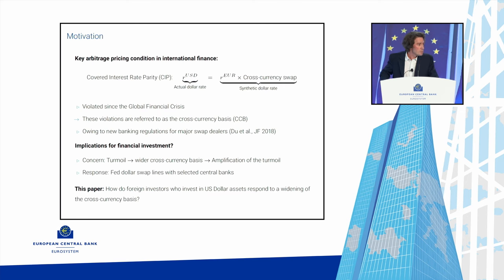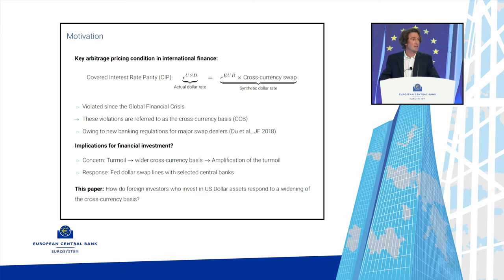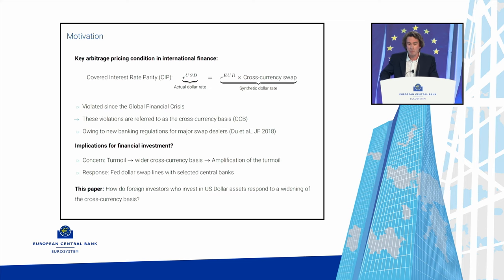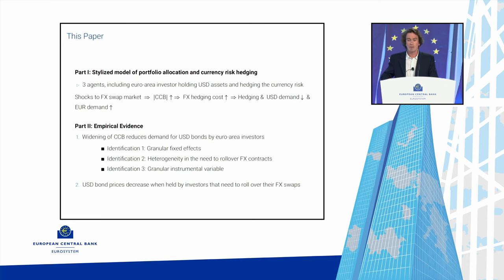What we don't know much about — what is not in the literature — are the implications of the cross-currency basis. The main concern is that in periods of turmoil there is a widening of the basis, and this widening somehow amplifies the turmoil through investment. This concern is so present that the Fed in periods of turmoil has opened up dollar swap lines with selected central banks. In this paper we ask: how do foreign investors who invest in US dollars respond to widening of the cross-currency basis?